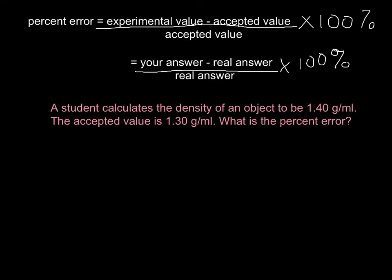In slang, and to help you remember this, think of it this way: you take your answer minus the real answer, then divide by the real answer, and then times it by 100%.